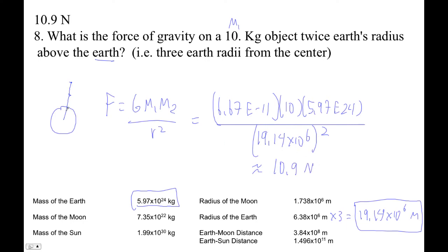Another way to do this, by the way, is if you're three times as far away, you should have one-ninth of force, right? So a 10-kilogram object on the surface of the Earth is 10 times 9.8 is 98 Newtons.